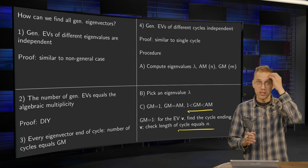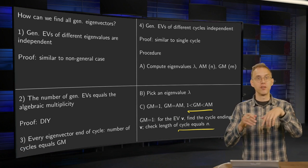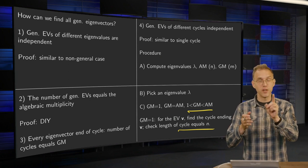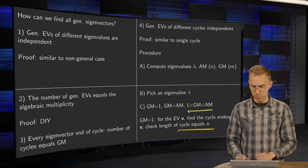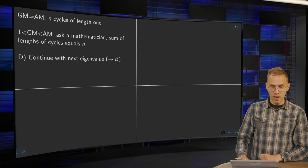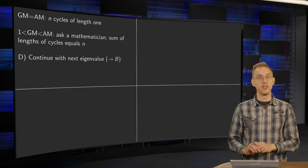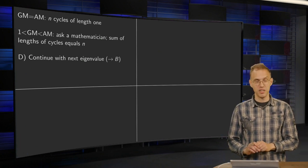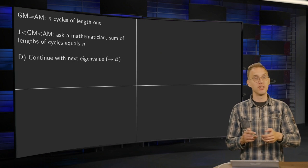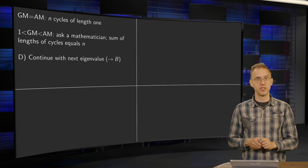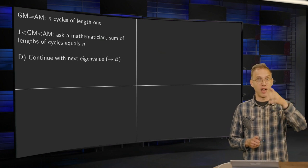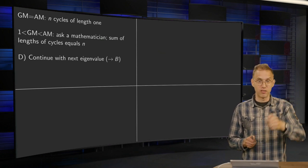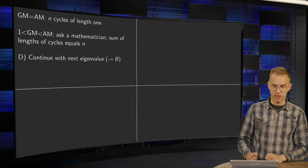So if we have a geometric multiplicity one for this particular λ, we have only one cycle because we have only one endpoint. If the geometric multiplicity equals the algebraic multiplicity, that's nice, because that means I have only normal eigenvectors. So I will have basically n cycles of all length one because I have only normal eigenvectors.